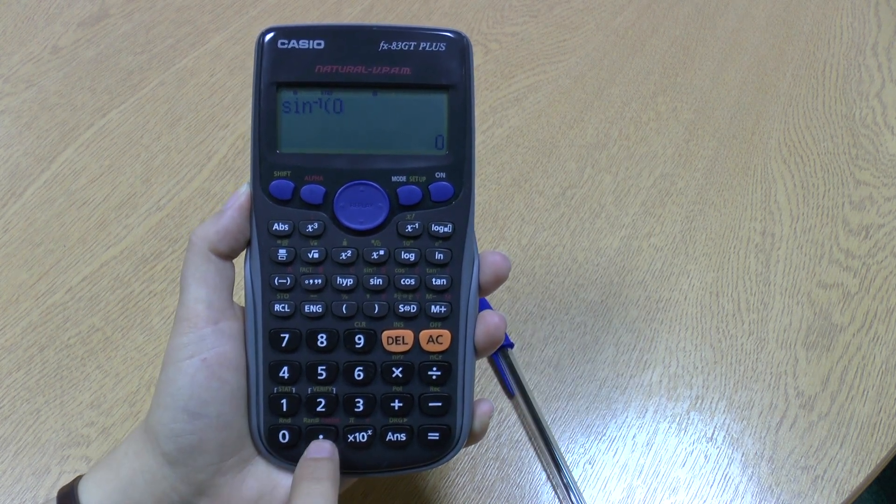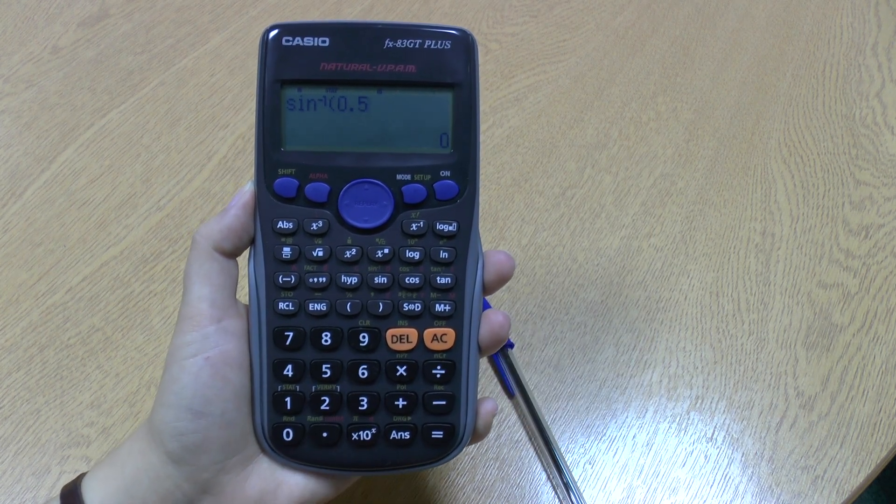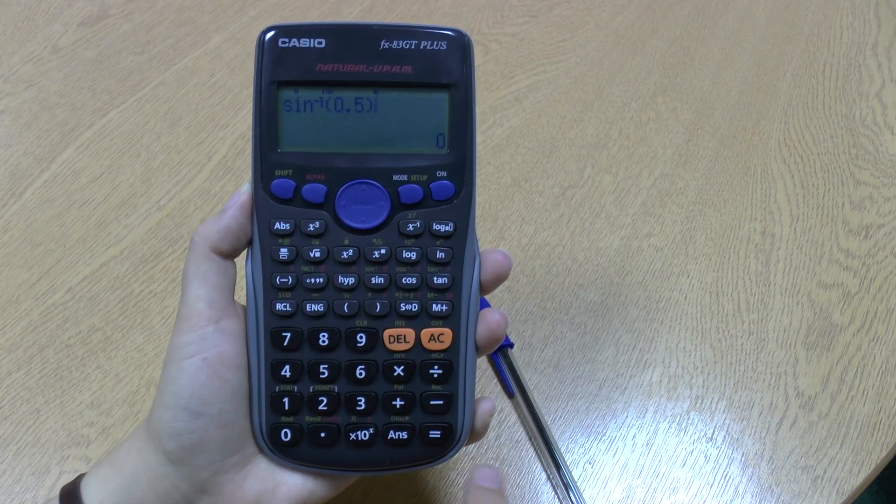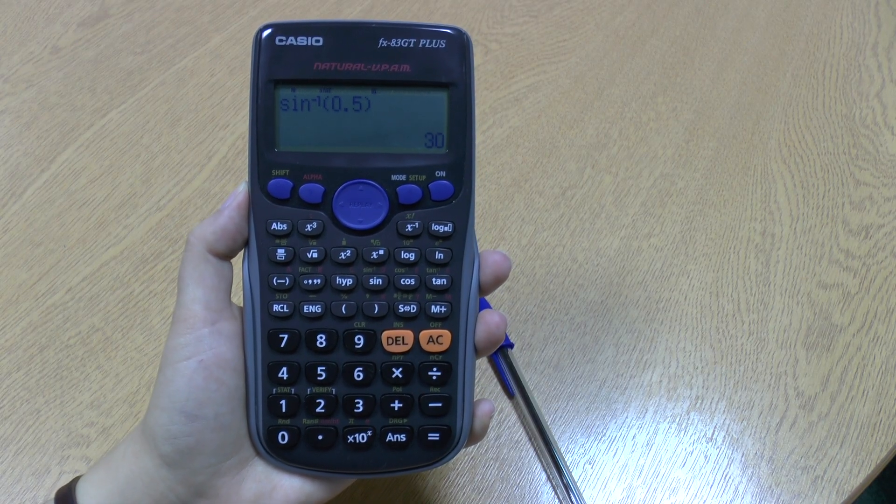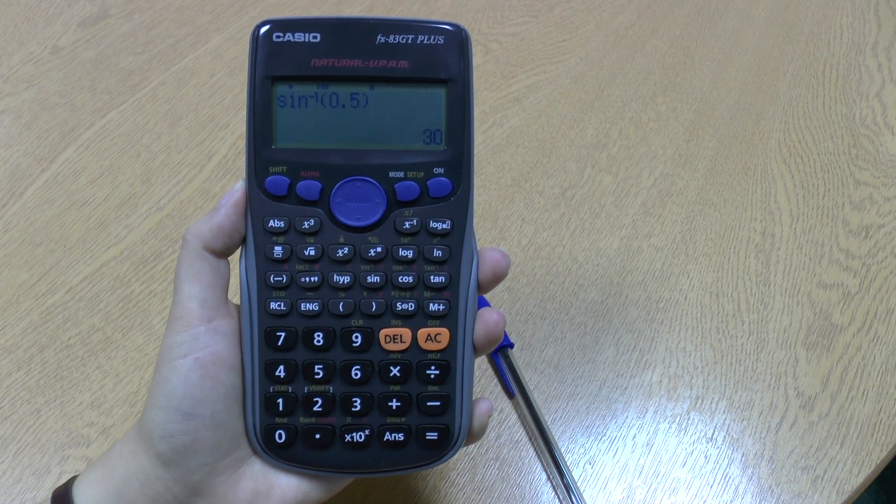I now put in my number, so 0.5, close my bracket, press equals, and there we go. Sine to the minus 1 of 0.5 is 30.